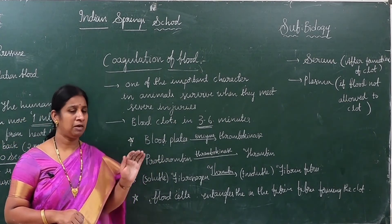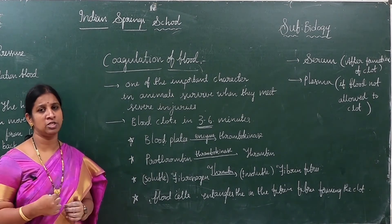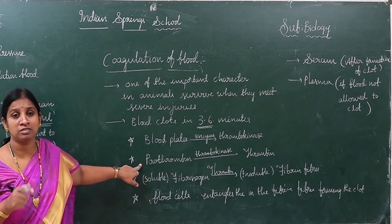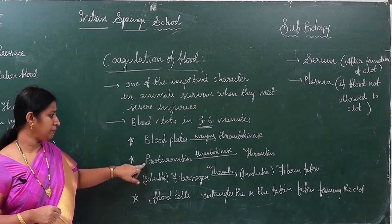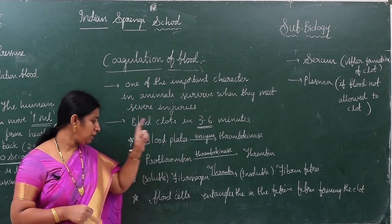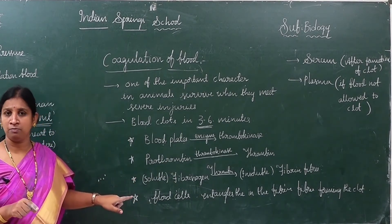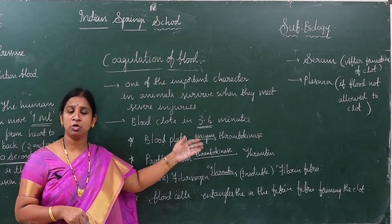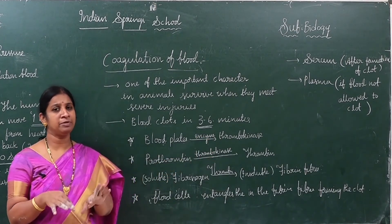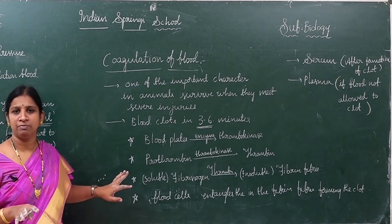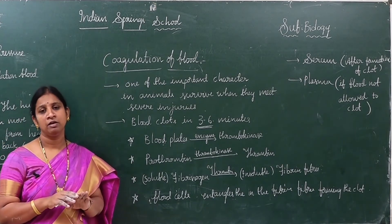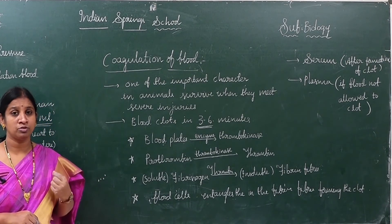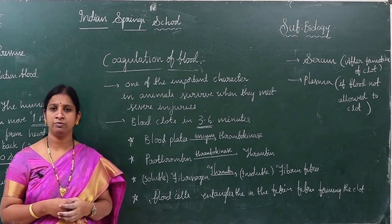To recap the whole coagulation process: as soon as an injury happens, blood platelets immediately produce an enzyme called thrombokinase. Thrombokinase acts on prothrombin and converts it into thrombin. Thrombin then acts on soluble fibrinogen and converts it into insoluble fibrin fibers. Once the fibers are ready, blood cells mix with the fibrin fibers and a clot is formed — the whole process takes 3 to 6 minutes.